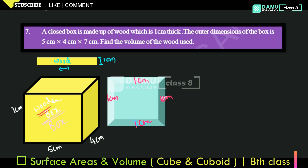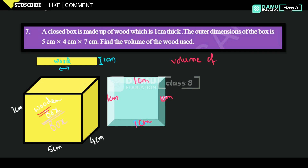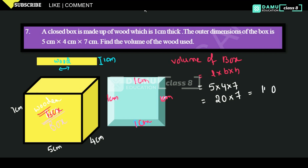We need to find the volume of the wooden box. The volume of the outer box completely is L into B into H. So L is 5, B is 4, H is 7. That gives us 5 into 4 into 7 — 5 fours are 20, into 7 gives us 140 centimeters cube. So the outer volume is 140 centimeters cube.